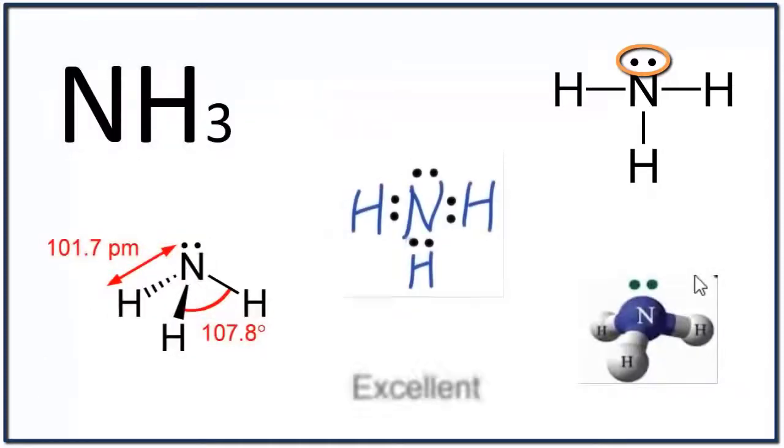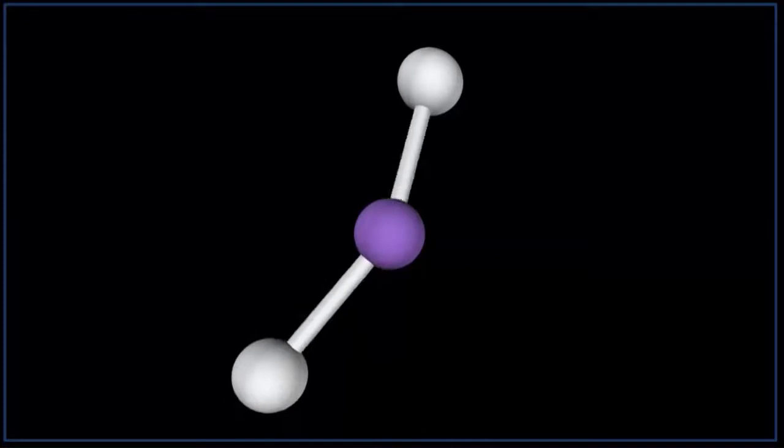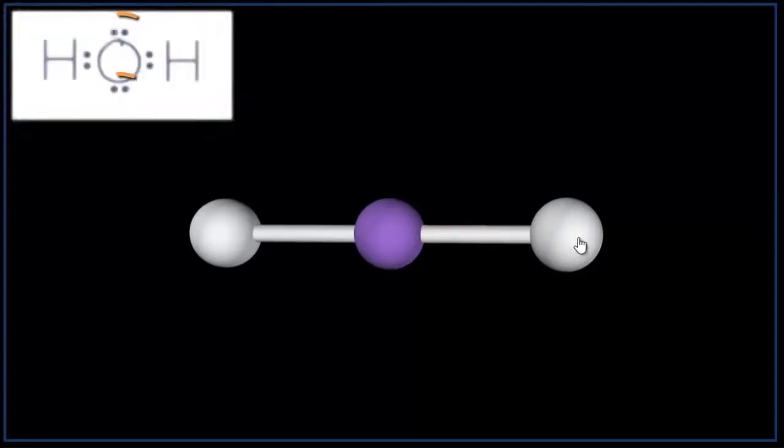H2O is an excellent example. So we'll start with our oxygen atom, and we'll put two hydrogen atoms on that. They spread out to be as far away as possible from each other, and it looks like it would be symmetrical, like these two hydrogens would cancel out. However, we have our lone pairs, two of them.